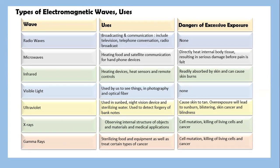Ultraviolet: we use in sunbeds, night vision devices, sterilizing water, and used to detect forgery in jewelry or banknotes. What are the implications? Overexposure causes skin to tan. Overexposure will lead to sunburn, blistering, skin cancer, and blindness.